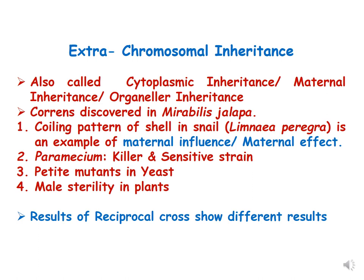We discussed the example of leaf variegation in Mirabilis jalapa in the first lecture. In today's lecture we are going to discuss the second example, which is the coiling pattern of the shell in the snail Limnaea peregra. This is an example of maternal influence or maternal effect. Other examples of extrachromosomal inheritance include Paramecium, petite mutants in yeast, and male sterility in plants. Reciprocal crosses show different results in extrachromosomal inheritance.